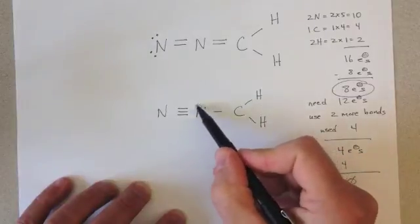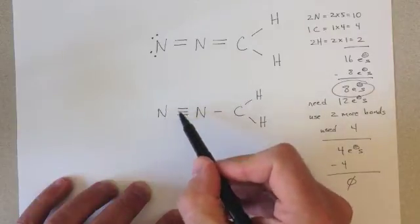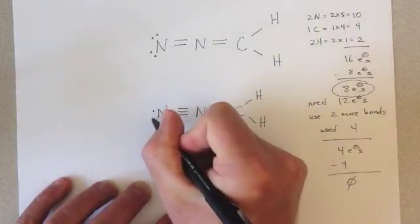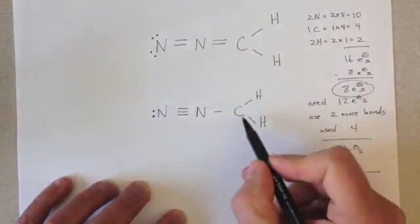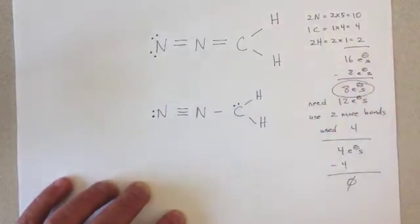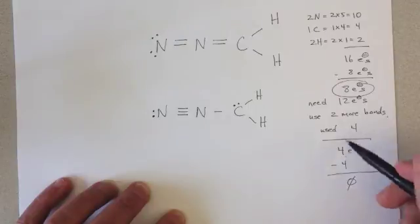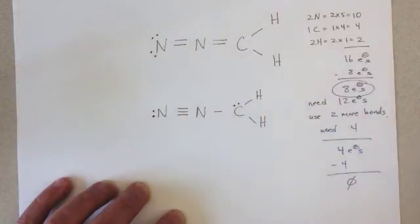Okay. This central nitrogen now has a complete octet. This nitrogen on the end has six electrons. It needs two more. This carbon has six electrons. It needs two more. Again, I'm left with zero electrons. I used my two bonds. I had four electrons left over, and those are used as lone pairs to satisfy the octet.